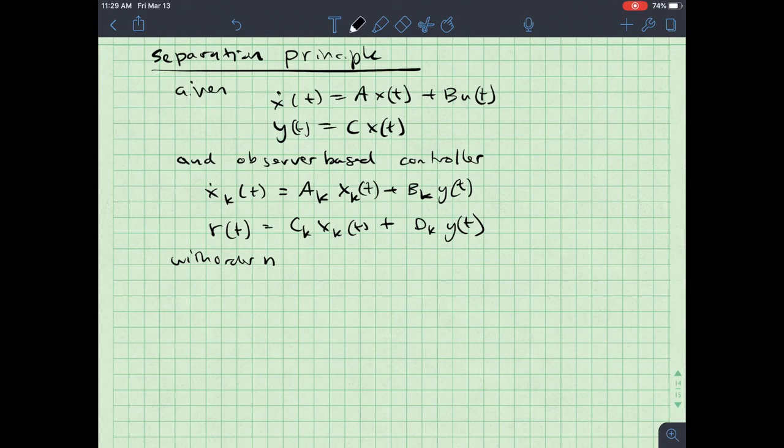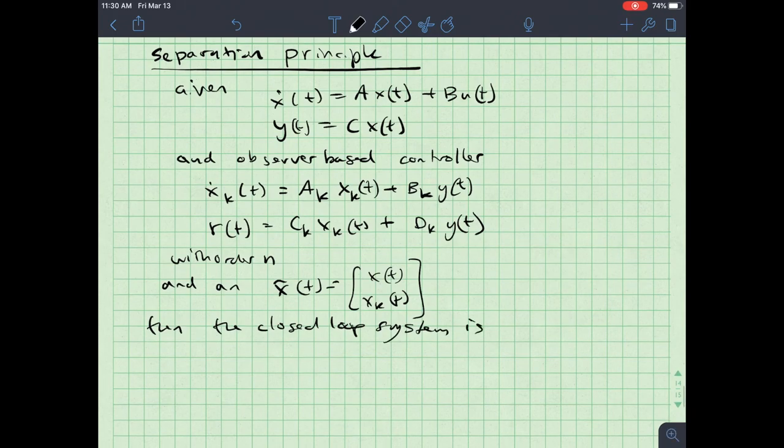And then I'm going to also define a state which augments the original state x with the state x k. So we'll call that x tilde of t. It's equal to x of t x k of t. Then I can write the closed loop system. The closed loop system is going to be written as x tilde dot of t, which is equal to a tilde plus b tilde times the matrix a sub k, b sub k, c sub k, d sub k.